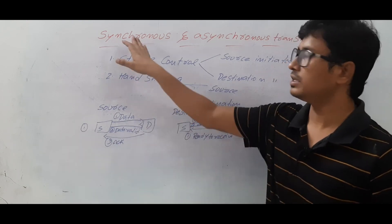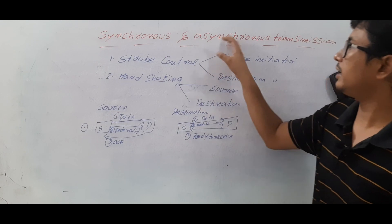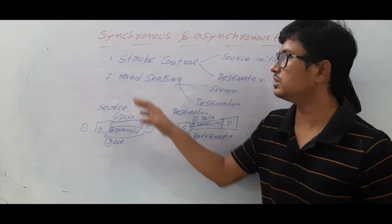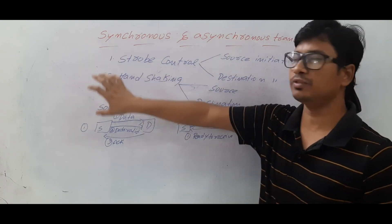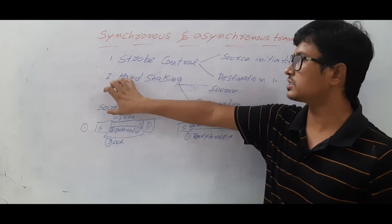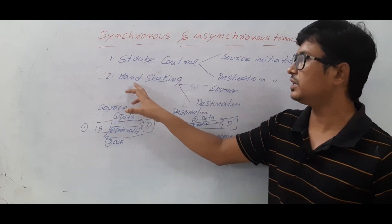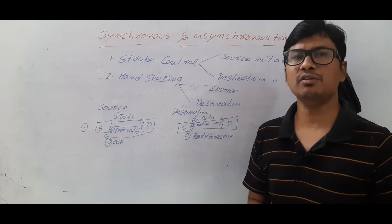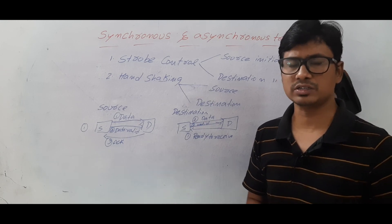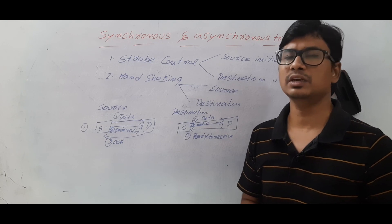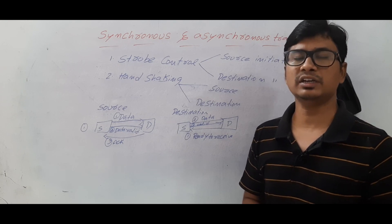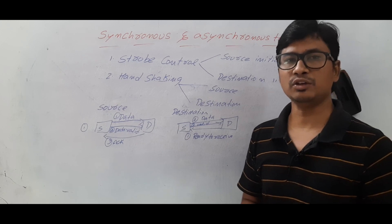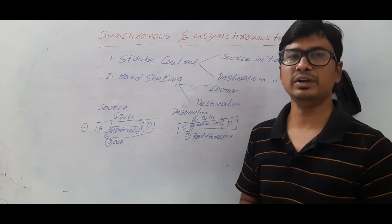I hope you have understood synchronous transmission and asynchronous transmission. In asynchronous transmission, synchronization can be achieved using two techniques: the strobe control signal technique and the handshaking mechanism. If you still have any doubts related to this concept, feel free to ask in the comment section. I will try to clear your doubts in less than 24 hours. Thank you for watching my video. Have a nice day.